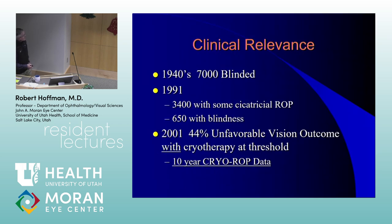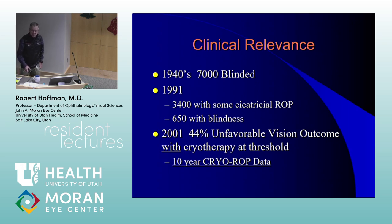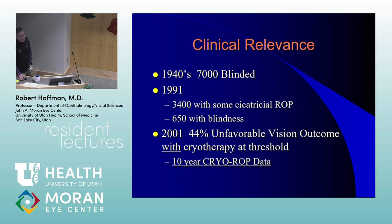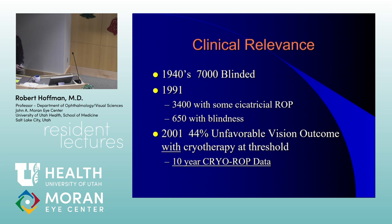There were 7,000 kids blinded in the 40s in the U.S. in that initial epidemic. As recently as 1991 — after we were treating kids with cryo when appropriate — there were still about 650 kids across the U.S. entering the blind school ranks. In 2001, there was still a 44% unfavorable outcome in kids who had cryotherapy at threshold. Did it decrease the bad outcome? Absolutely. But is there still work to be done? Yes — that's one of the underlying themes.